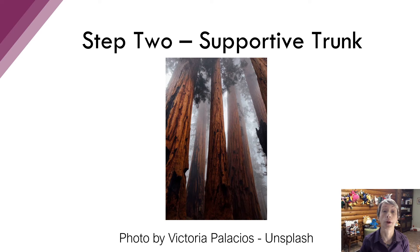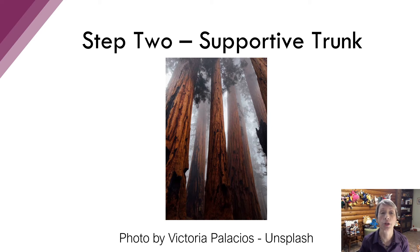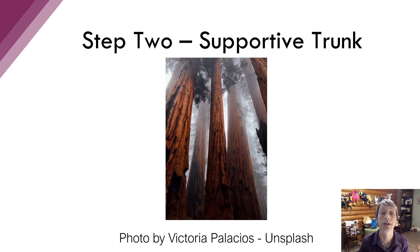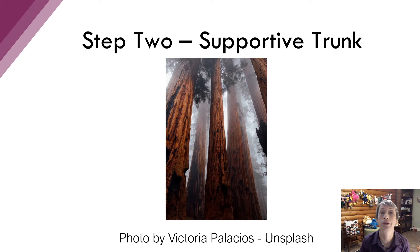Now let's look at the supportive trunk of the tree, which represents step two. As the trunk of the tree grows, it develops rings and becomes thicker and sturdier to support the branches of the tree. The trunk connects the roots to the branches. Interactions between children and adults with back and forth circles of communication, or serve and return cycles, support the development of healthy relationships. The more that children share joy in interactions with others, the more the circles support the development of positive memories of connecting with others. Like the circular rings in a tree trunk that reflect healthy growth of a tree, frequent and joyful serve and return cycles lead to healthy brain development.